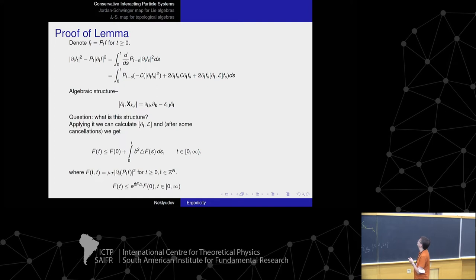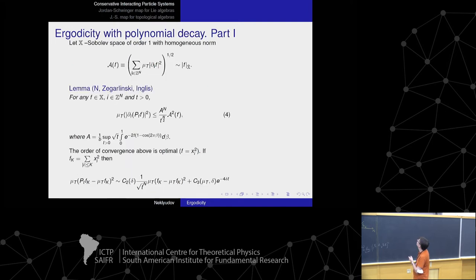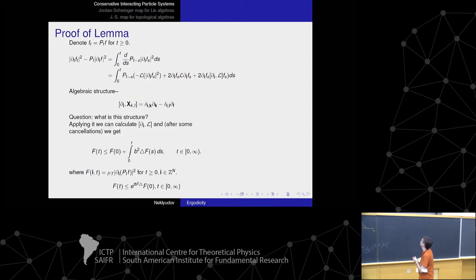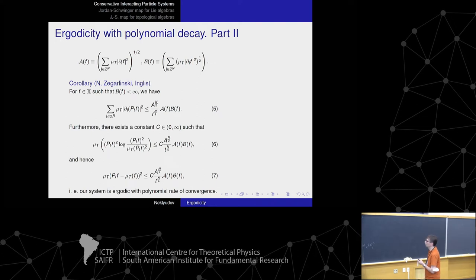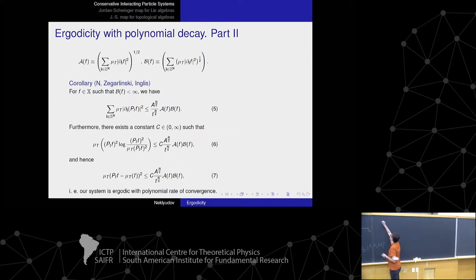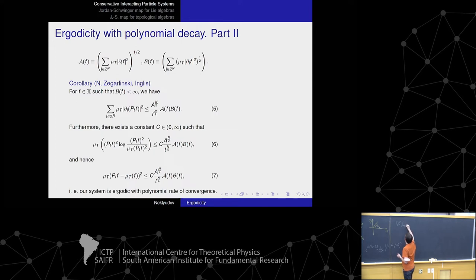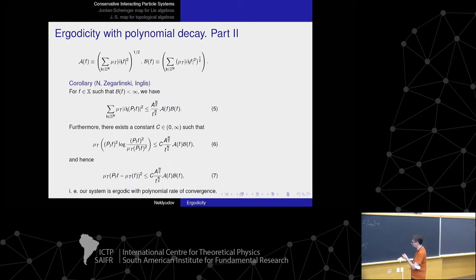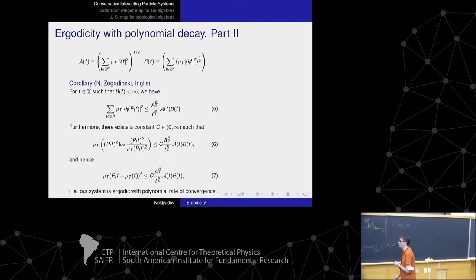The question then arose: what is the algebraic structure and where does it come from? Using that lemma we can prove ergodicity of the system. We also use the fact that our operator L commutes with the standard Ornstein-Uhlenbeck operator; using this we prove that the infinite sum converges to zero. From the Poincaré inequality — though the convergence rate here is not fully optimal — we get ergodicity of the system and a polynomial rate of convergence to equilibrium.